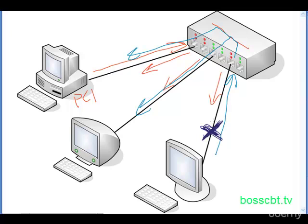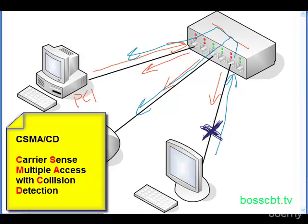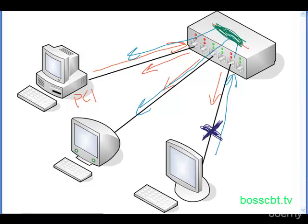The last point to note is CSMA/CD. That still exists on a 10Base-T network because we still have our bus. As long as we have that bus, there is the opportunity for collisions when more than one PC sources a packet. So Carrier Sense Multiple Access with Collision Detection, as discussed in the 10Base-2 and 5 tutorials — and there's also a dedicated tutorial on CSMA/CD — is still used on a 10Base-T local area network.